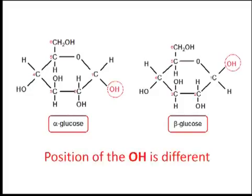If you look at the diagrams for alpha and beta glucose, you'll notice that in alpha glucose, the hydrogen bonded to carbon-1 is at the top, whilst the hydroxyl group (OH) also bonded to carbon-1 is at the bottom. In beta glucose, the OH is at the top and the H is at the bottom. I would recommend you look at the diagrams — it's much easier to understand that way, and make sure you learn how to draw them from each textbook.